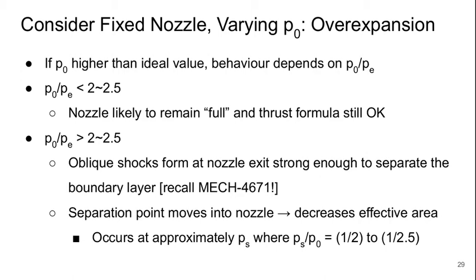If P-naught over PE is more than about 2 to 2.5, then we're going to get a series of oblique shock waves forming in the nozzle at the nozzle exit that are strong enough to separate the boundary layer. Hopefully you talked about this a little bit in aerodynamics and performance last winter.